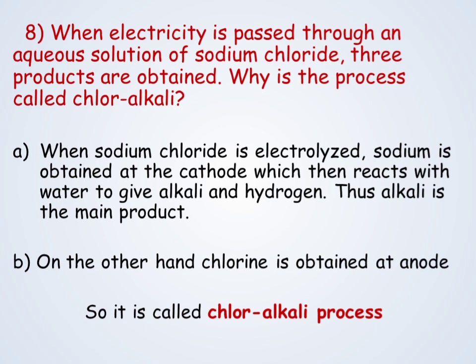When electricity is passed through an aqueous solution of sodium chloride, three products are obtained. Why is this process called the chloralkali process? When sodium chloride is electrolyzed, sodium is obtained at the cathode which then reacts with water to give alkali and hydrogen — this alkali is the main product. On the other hand, chlorine is obtained at the anode. So it is called the chloralkali process.